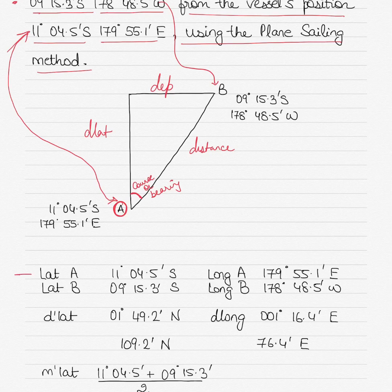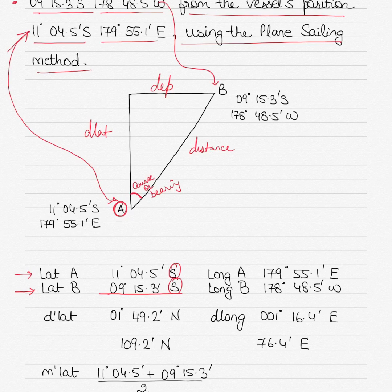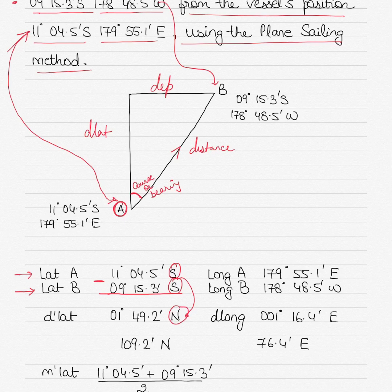I write down the lat and long of position A and lat and long of position B. Once I have two latitudes, the rule of thumb is: same names subtract and different names add. Here I have both south, so same names — I will subtract. I am going from 11°S towards 9°S, so I am going in a northerly direction. My resultant D lat would be North. So 11°04.5' minus 9°15.3' gives me 1°49.2'N.